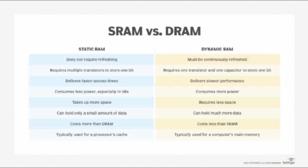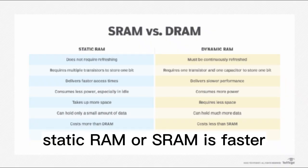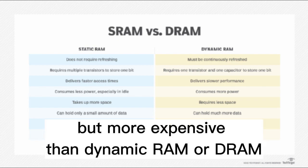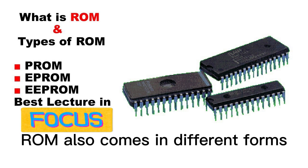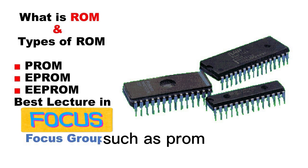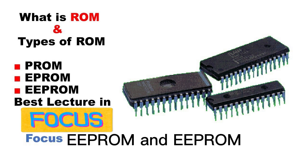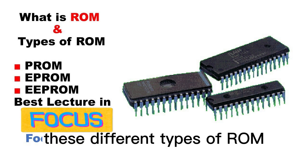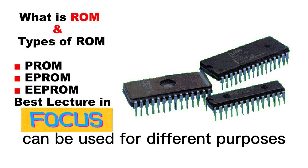For example, static RAM, or SRAM, is faster but more expensive than dynamic RAM, or DRAM. ROM also comes in different forms such as PROM, EPROM, and EEPROM. These different types of ROM can be used for different purposes.